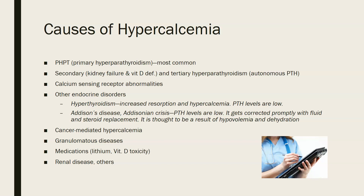The causes of hypercalcemia include primary hyperparathyroidism, which is the most common. There's also secondary and tertiary hyperparathyroidism — secondary would be due to kidney failure or vitamin D deficiency, and tertiary is an autonomous production of parathyroid hormone. There can also be calcium sensing receptor abnormalities, and other endocrine disorders such as hyperthyroidism, where increased bone resorption leads to hypercalcemia. In Addison's disease and Addisonian crisis, PTH levels are low, and it is thought to result from hypervolemia and dehydration.